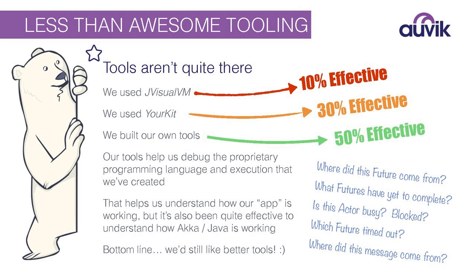We tried to solve the message origin problem using something I built about a year ago that lifts all messages into our own protocol and attaches all kinds of metadata to them. I still like that approach; it worked well at the last company I was at. It's just a very difficult thing to graft into an application that has reached this level of maturity — it's not 12 lines of code anymore. So if you're going to try something like that, you need to get it in there early. There's an example in my GitHub repository or blog explaining how to do this using implicits.